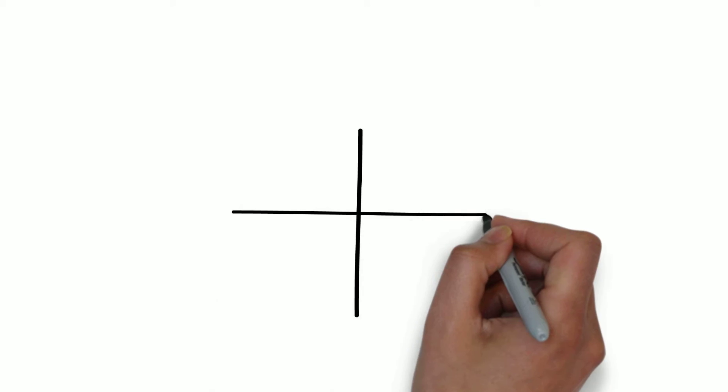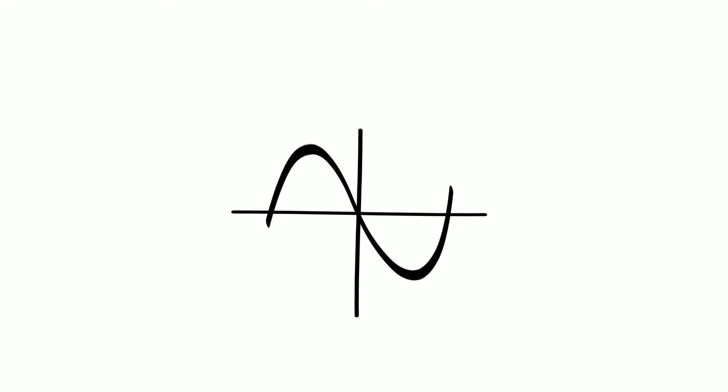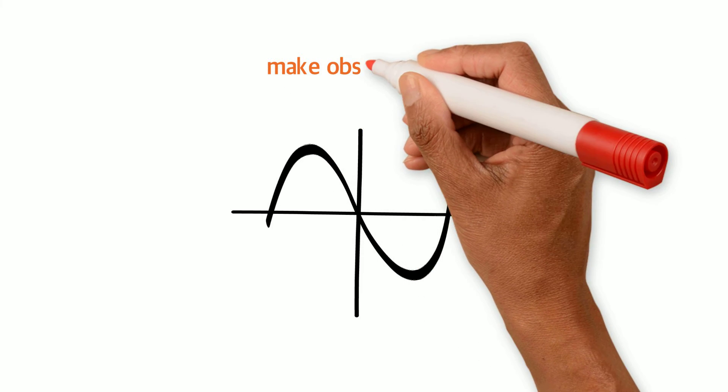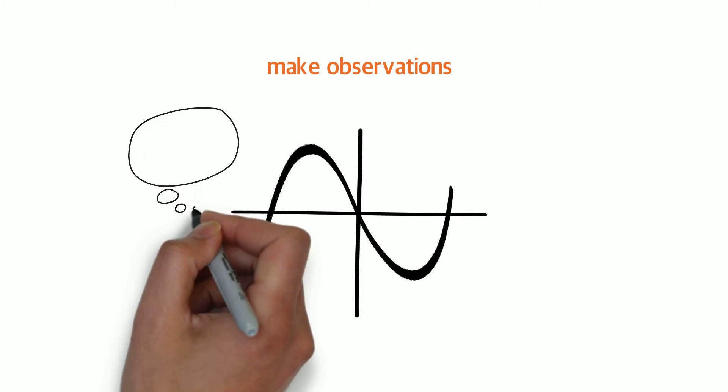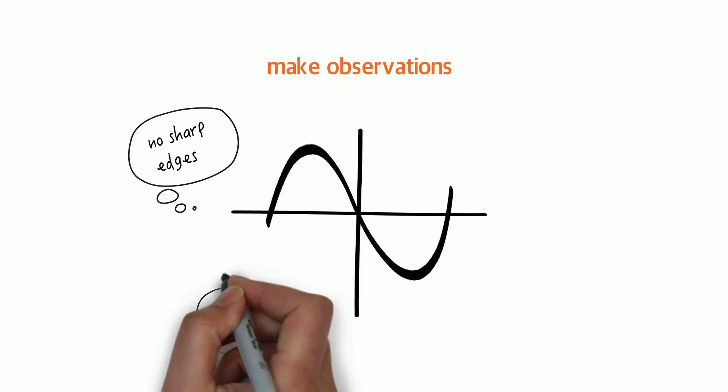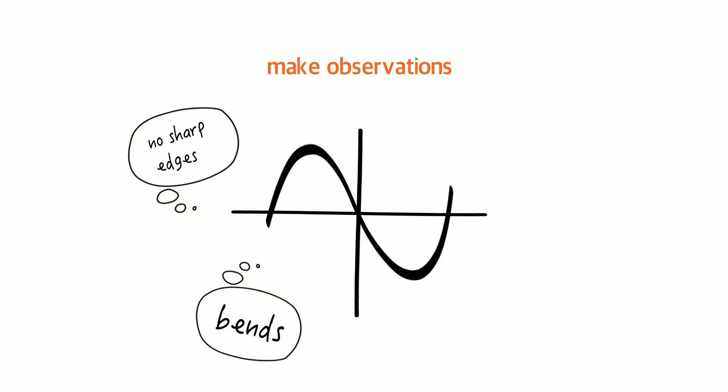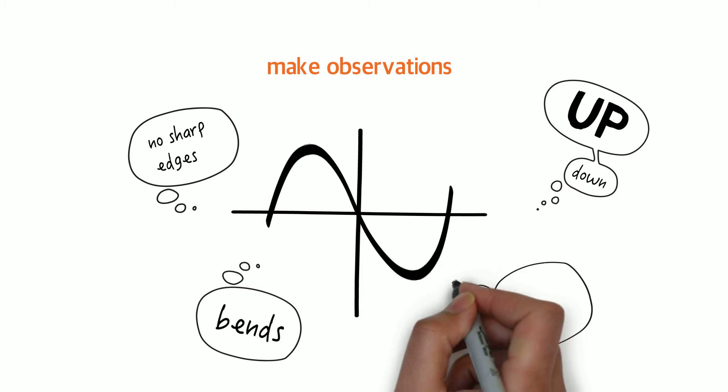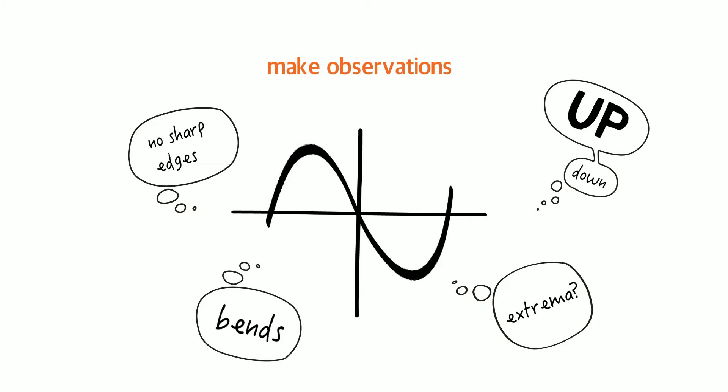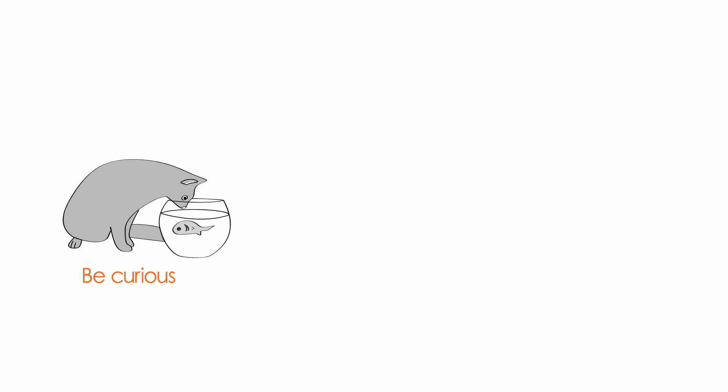Say you're asked to find the extrema indicated on this graph. Do make observations. Perhaps you'll think, that graph has no sharp edges. It bends and changes direction. It goes up and down. I don't know what it's called. I don't know what an extrema is. If you don't know what an extrema is, you've identified something to find out. Don't be content to think, I don't know. Do be curious.